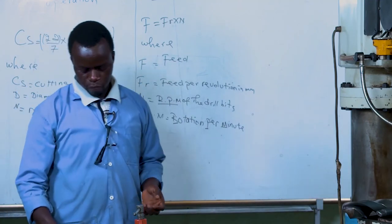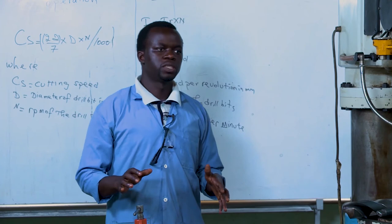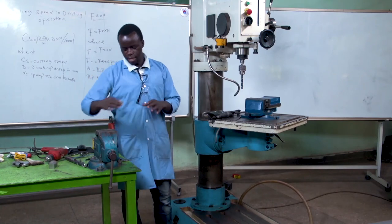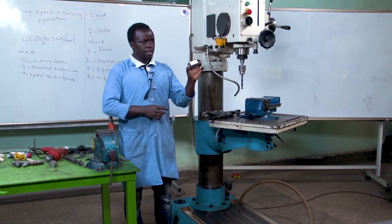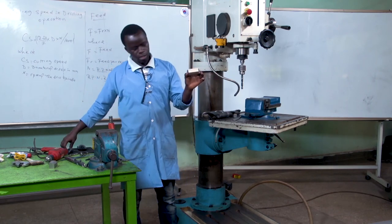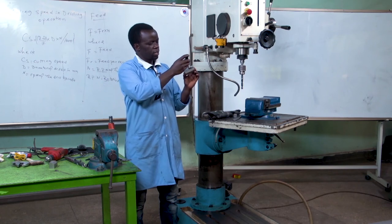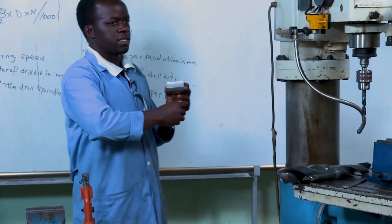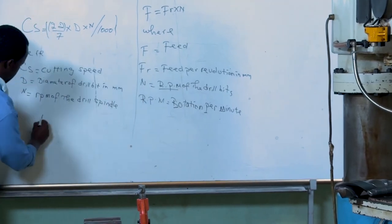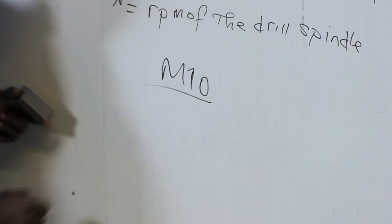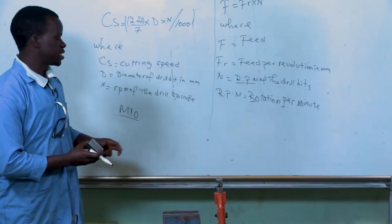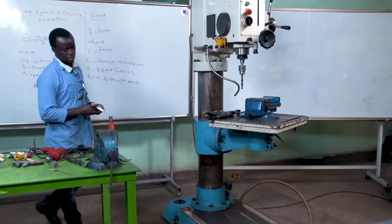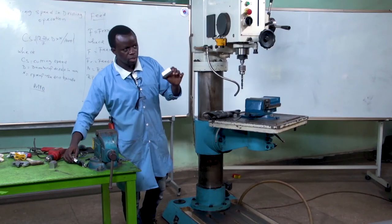After seeing the parameters of drilling operation, we are going to look at a task. The task is to make an internal thread on my workpiece — I need to make a thread so that a screw with a given specification can enter. As seen in the previous video, we first choose the correct drill bit size, then perform the drilling operation.